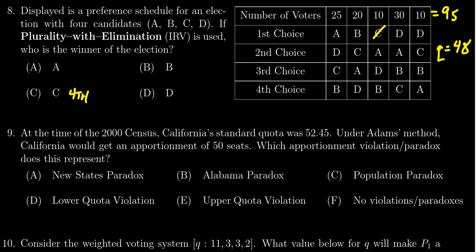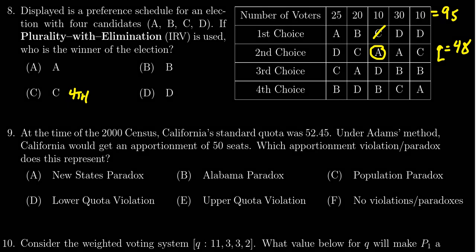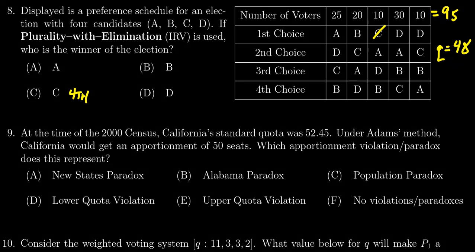Player C comes in last place. After removing C, the voters who had C first now have their votes redistributed. A gains 10 votes, so A now has 35 votes — still not enough to reach the quota.